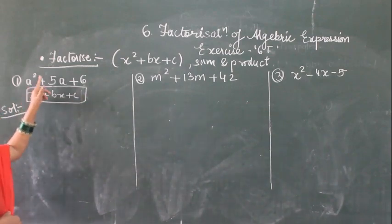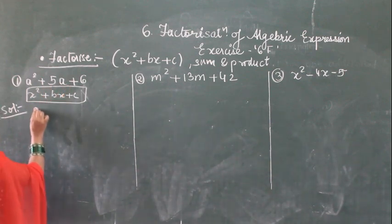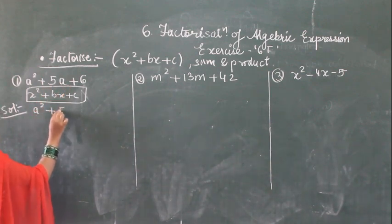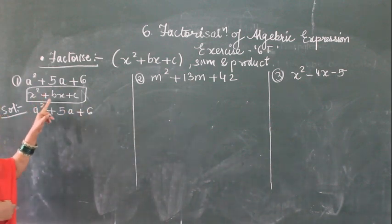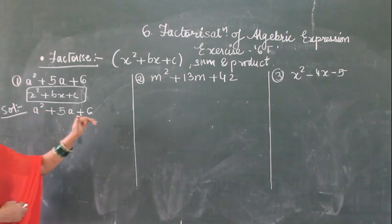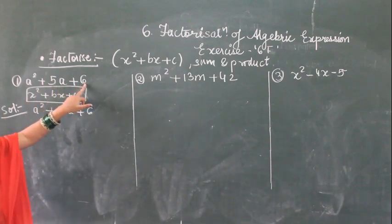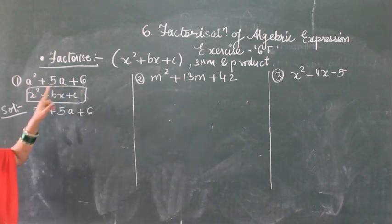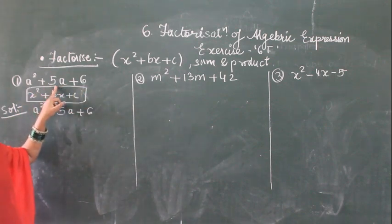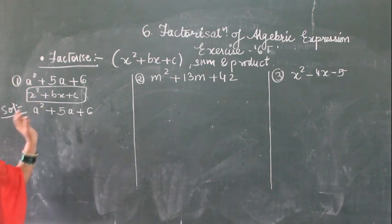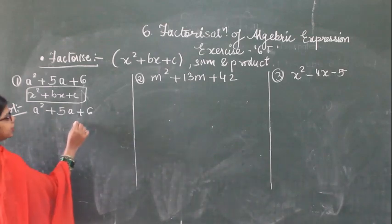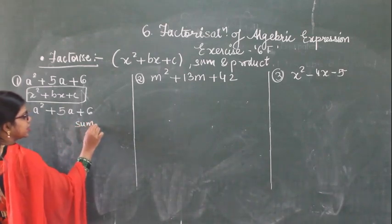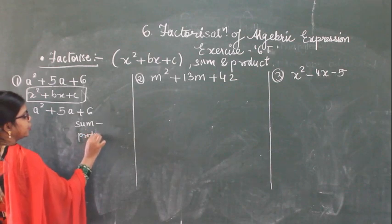Here it is given a square plus 5a plus 6. This is in the form of x square plus bx plus c. We have to split the middle term, so the sum of any two numbers will be equal to the middle term and the product of the numbers will be equal to 6. We have to find the sum and product.